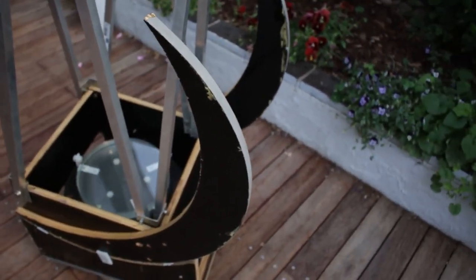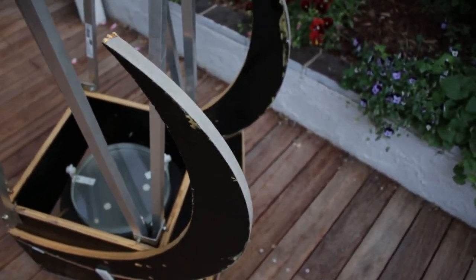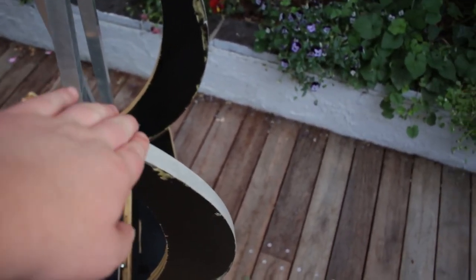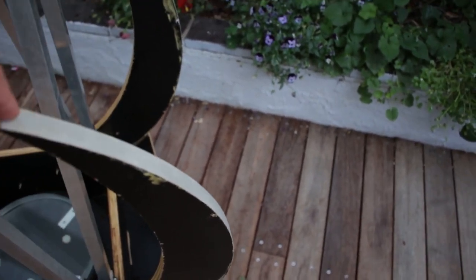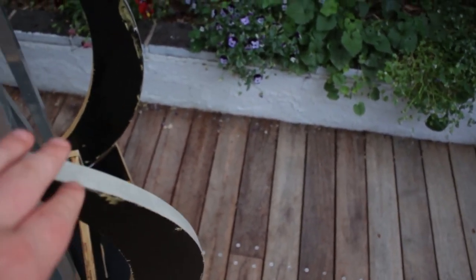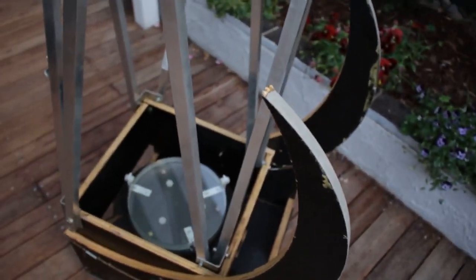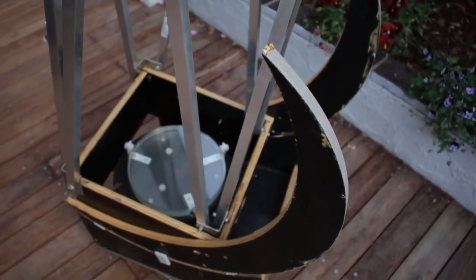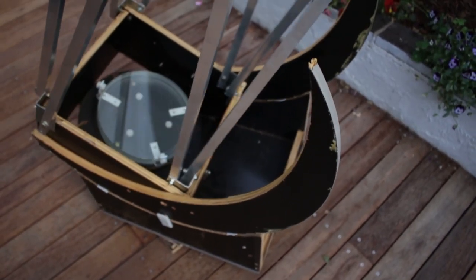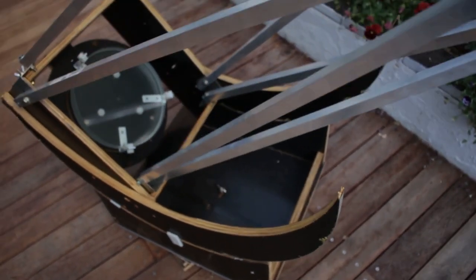These huge arc-shaped things are actually the bearings. So they're coated with a special type of plastic called Formica, which has bumps on it that'll ride on the Teflon just at the right consistency to make a smooth motion. And it pivots just beautifully like that.